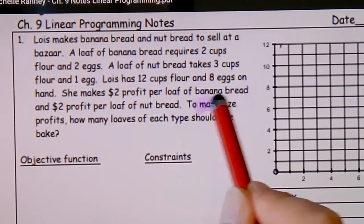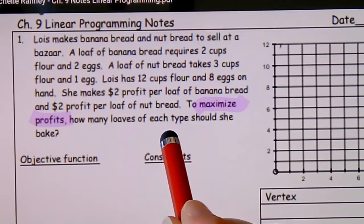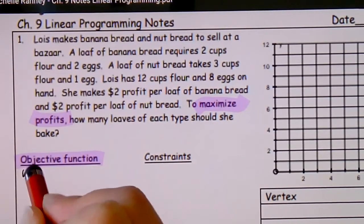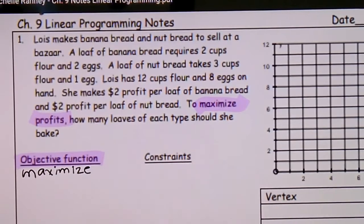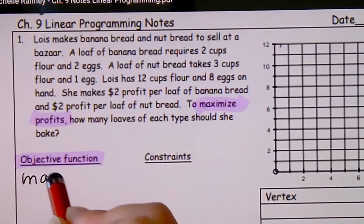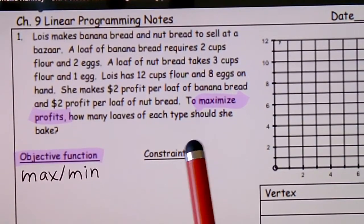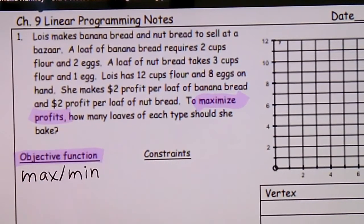We want to maximize profit — that's going to be our objective function. Our objective function is what we're trying to either maximize or minimize. For a lot of these problems dealing with companies or products, you usually want to maximize profit or minimize cost. In this case, we want to maximize profit, so this objective function is going to be on profit.